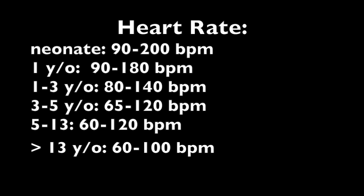Between 1 and 3, the lower number starts to decrease to 80, and the upper number definitely decreases to 140. So by age 2, I like to think of it this way: both the upper and lower limit of normal have decreased.